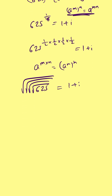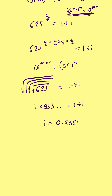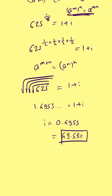On your calculator, take 625 and press the square root button four times. You should get approximately 1.4953, which equals 1 + i. Taking 1 to the left-hand side, i = 0.4953, or 49.53%, which is the annual growth rate — the CAGR.